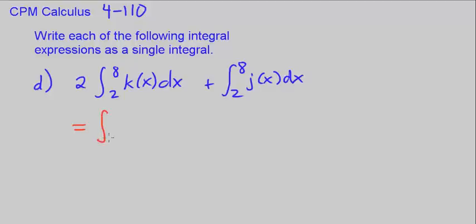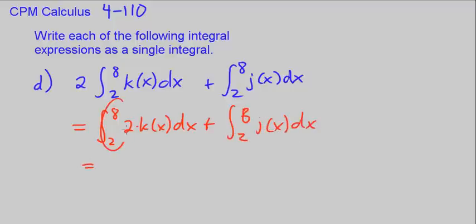So we can rewrite this first integral as the integral from 2 to 8 of 2 times k of x dx plus the integral from 2 to 8 j of x dx. Now, since we have the same boundaries on the integral...